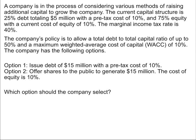That's our information — how much debt we have, how much equity we have. The company's policy is to allow a total debt to total capital ratio of up to 50% and a maximum weighted average cost of capital of 10%. We have two options: the first is to issue debt of $15 million with a pre-tax cost of 10%, and the second is to offer shares to the public to generate $15 million with a cost of equity of 10%. The question is: which option should the company select?